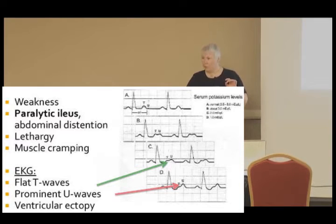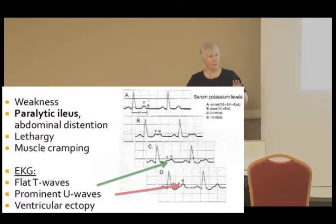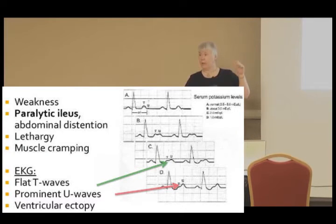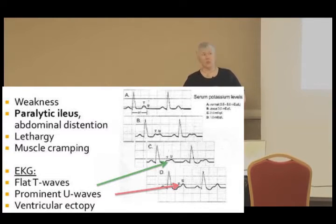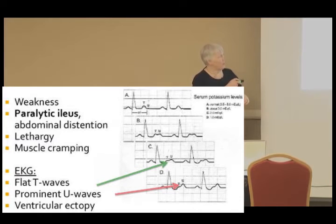The U wave becomes a clue if it is either elevated or has a negative deflection. A negative deflection can be a clue to ischemia. If it's elevated, it's usually a clue to either digoxin toxicity or electrolyte abnormalities. With hypokalemia, we certainly expect to see an elevation in the U wave.